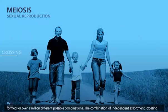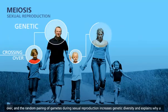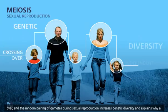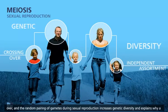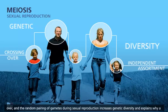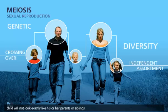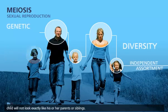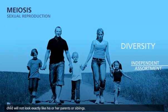The combination of independent assortment, crossing over, and the random pairing of gametes during sexual reproduction increases genetic diversity and explains why a child will not look exactly like his or her parents or siblings.